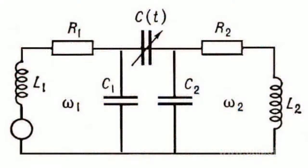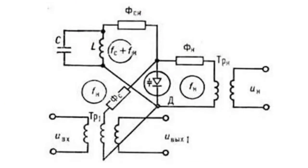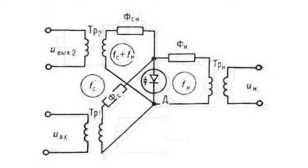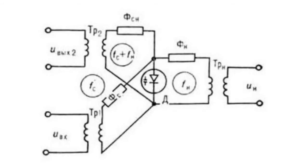Some frequency parametric amplifiers are spread most widely. In the centimeter range, the leadership belongs to positive feedback amplifiers that hold frequency. The ultra-high frequency range is prevailed by amplifiers converting frequency.